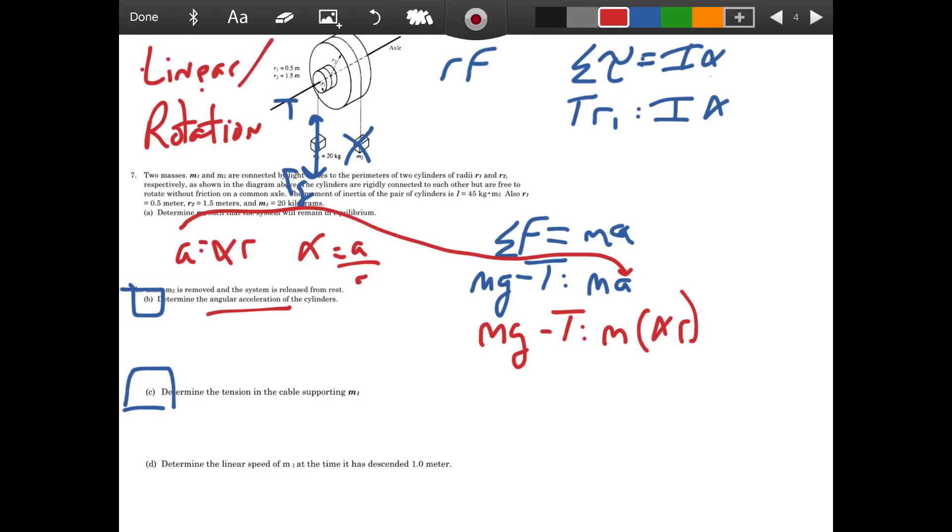So I'm going to get mg minus tension equals m times alpha r. Now we're going to end up having both of these equations have a tension and an angular acceleration term. So I'm not really sure which one I want to solve for first. But let's set one of these equal so we can eliminate some variables. So if I divide by I up here, I get that alpha or angular acceleration is equal to tension times r1 over I. So let's plug that in.